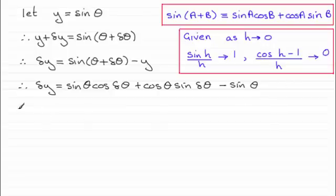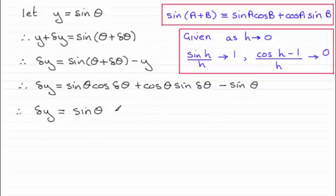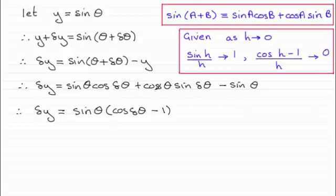The next thing I'm going to do is factorize the first term and the last term by pulling out sine theta as a common factor. So we end up with sine theta times all of cosine delta theta minus 1, plus cosine theta sine delta theta.